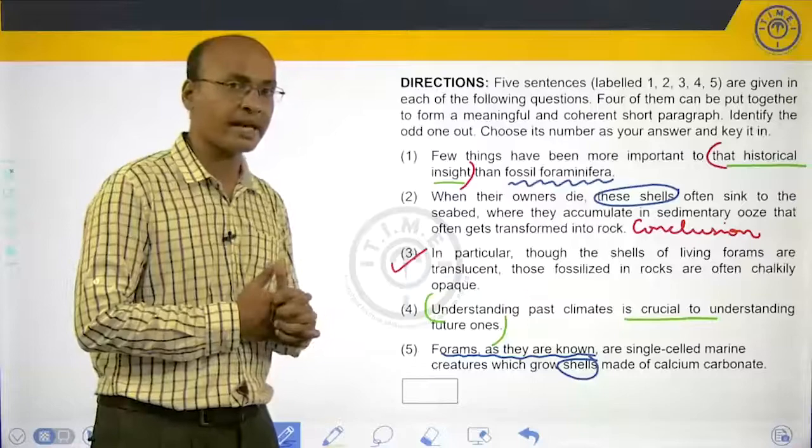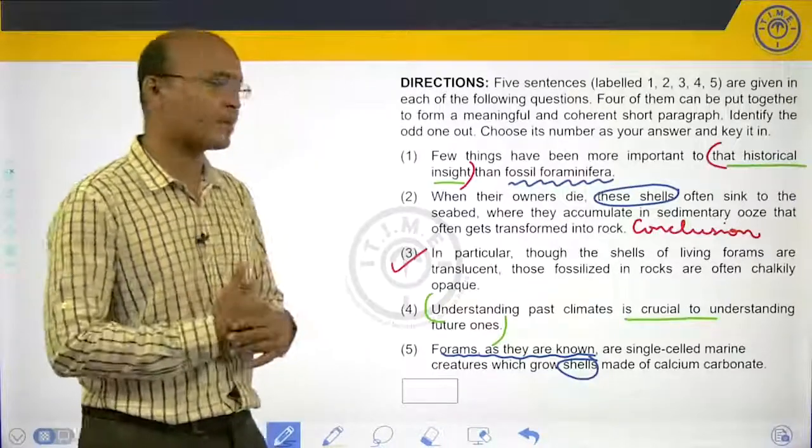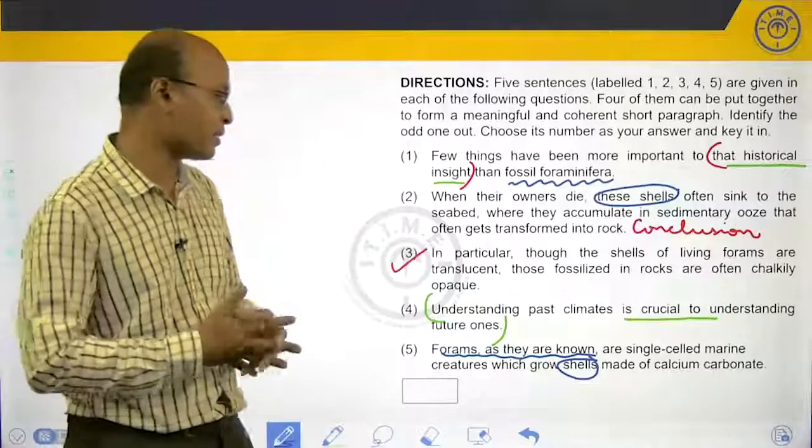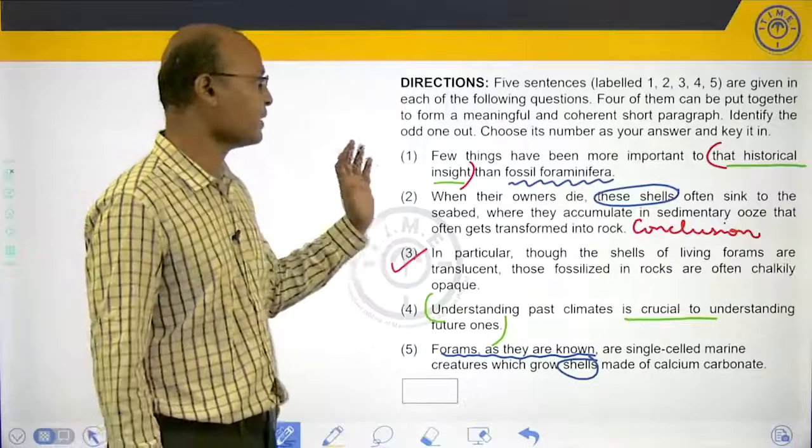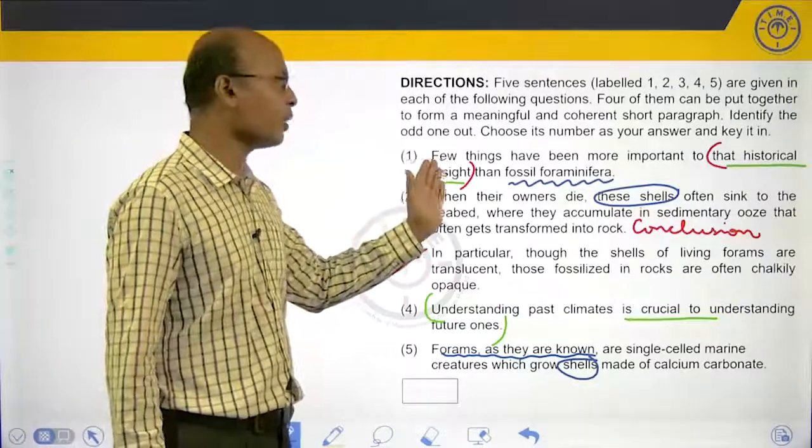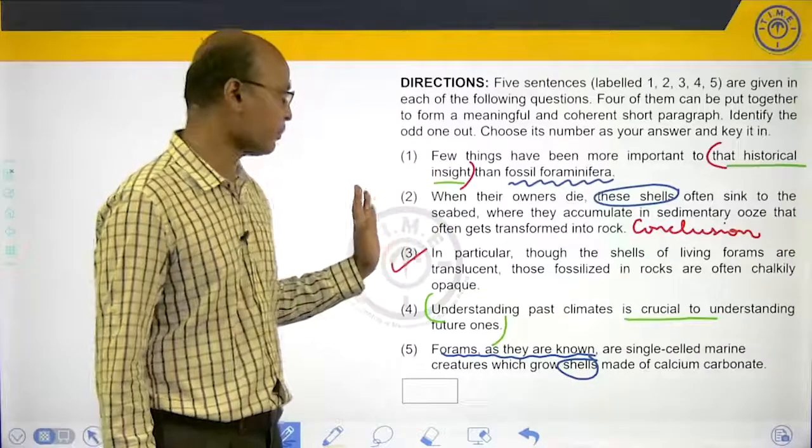Those are key things to be kept in mind. So we will see which four among these five sentences form a tight nutshell and one can be isolated as the odd man out. First sentence: few things have been more important to something than something else.